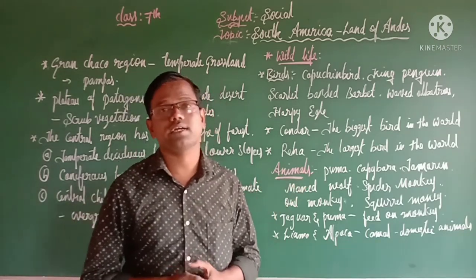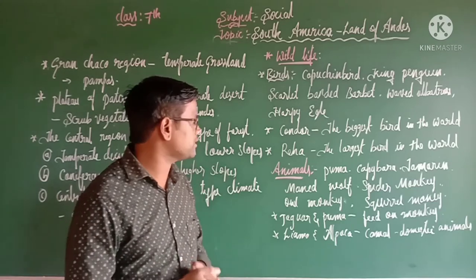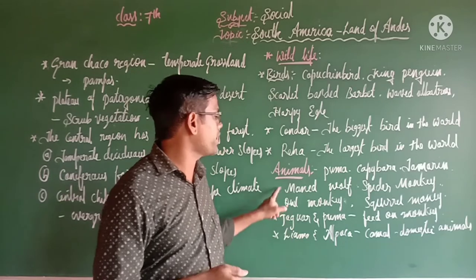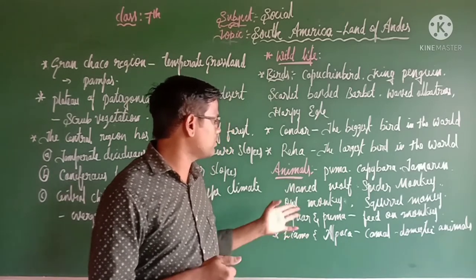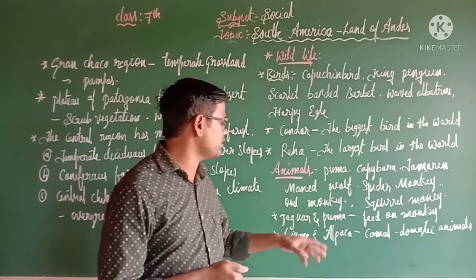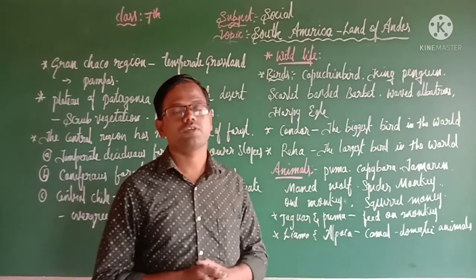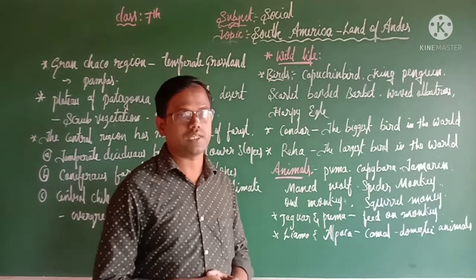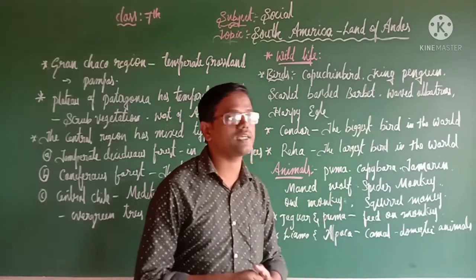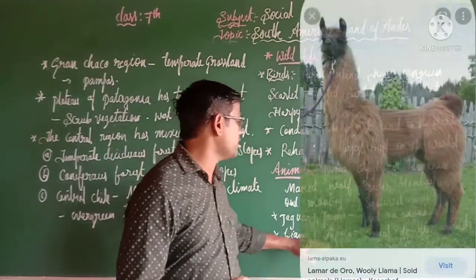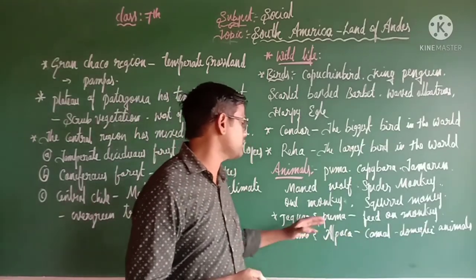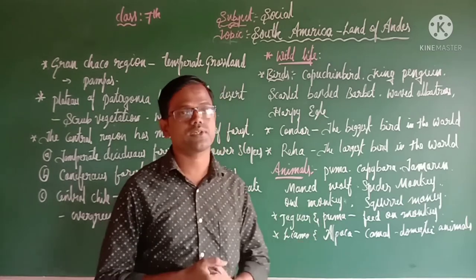South America has a variety of animals: puma, capybara, tamarin, maned wolf, spider monkeys, owl monkeys, squirrel monkeys, jaguar and puma, llama and alpaca. Among these, jaguar and puma are large animals that feed on monkeys and small animals. Llama and alpaca look like camels with long necks and are used as domestic animals.